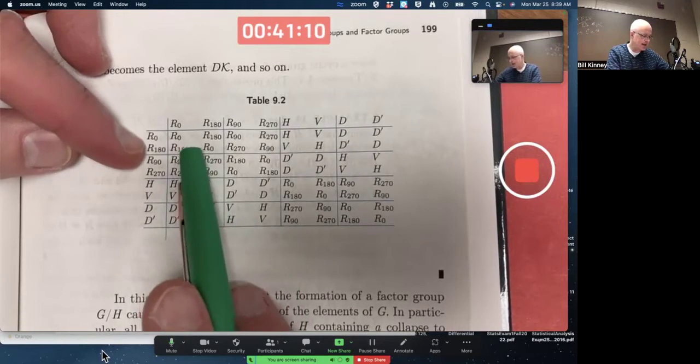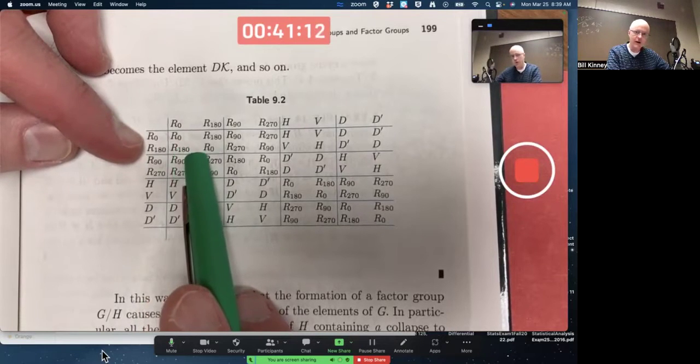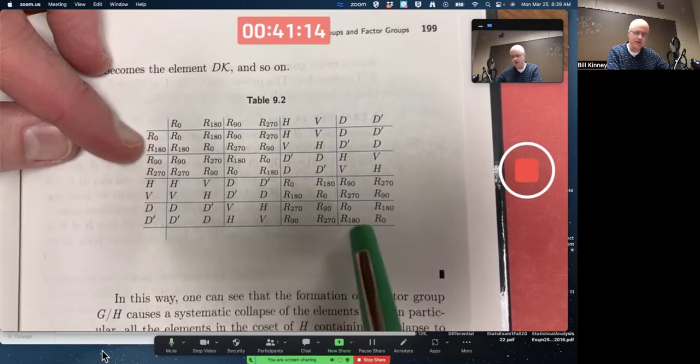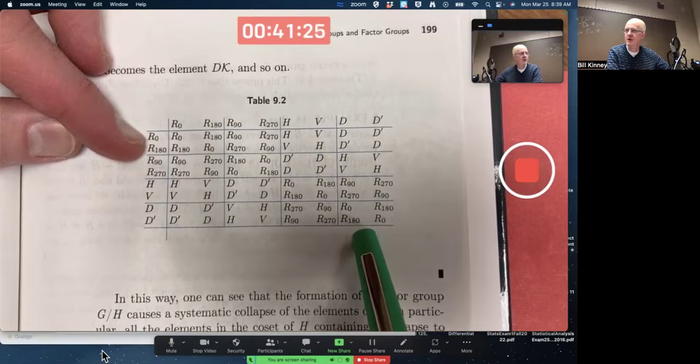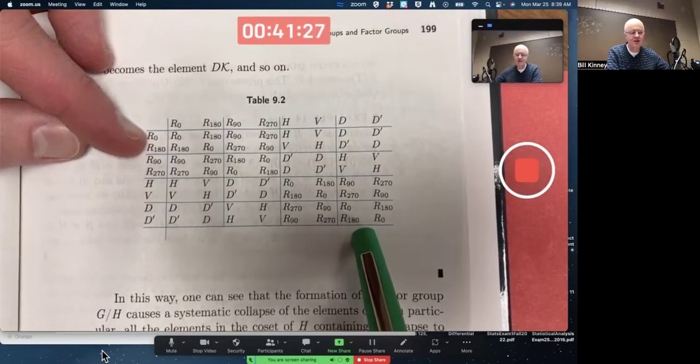Notice the identity element, which is the R0, R180 coset, is along the main diagonal. You square any of these cosets, you get the identity coset. It's isomorphic to the external direct product of Z2 and Z2. That's what it's isomorphic to. Which is not cyclic.